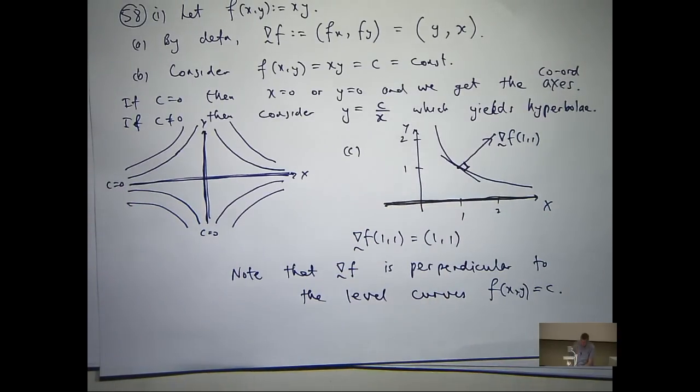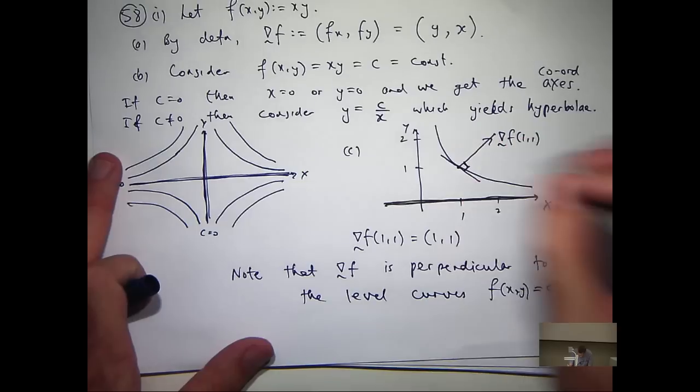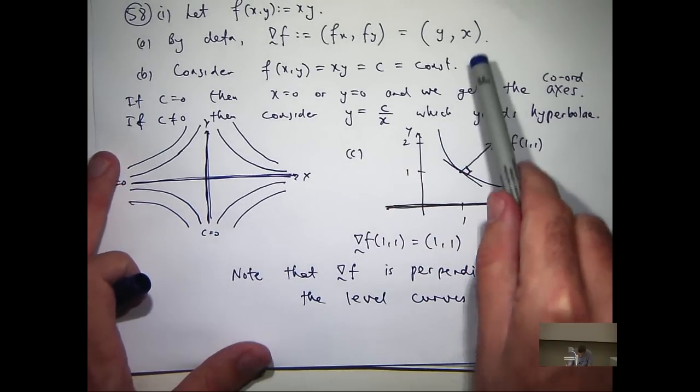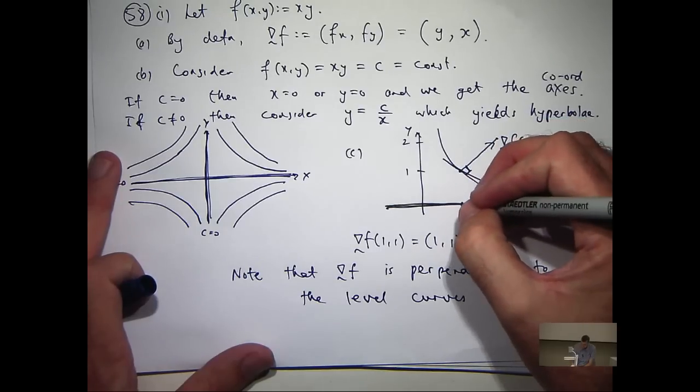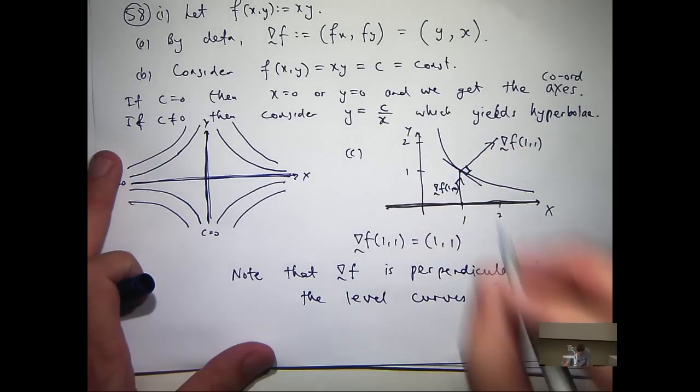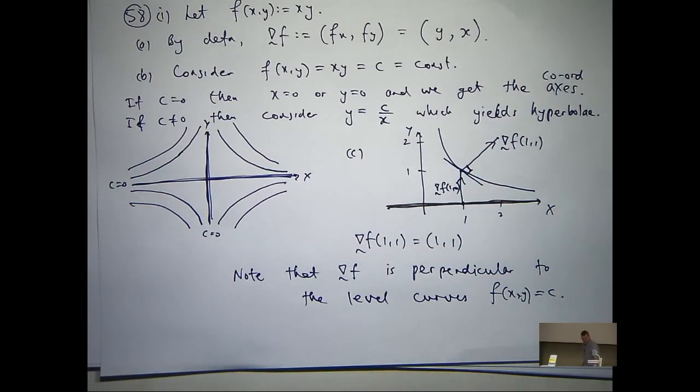So here's another level curve. This corresponds to the case c equals 0. Well, at this point, at the point x equals 1, y equals 0, my gradient vector is going to be 0, 1. So it's going to point straight up like that. Sorry, I know the writing's a bit small there. Again, it's perpendicular to the level, that particular level curve.